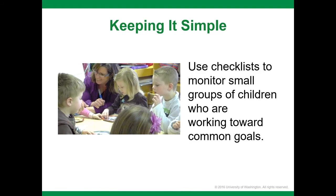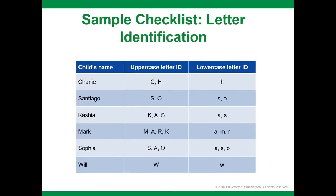Checklists can also be used to monitor the progress of small groups of children working towards common goals. For example, a checklist used to monitor a small group identified as needing extra help in literacy skills — learning the letters that make up their names — was designed to monitor uppercase and lowercase letter identification. Letter identification is part of alphabet knowledge, which falls under the literacy knowledge and skills domain from the Head Start Child Development and Early Learning Framework.